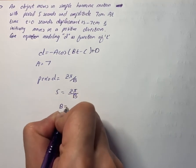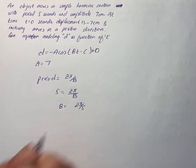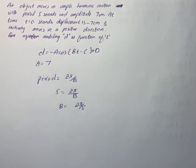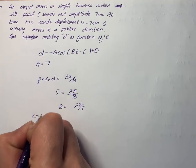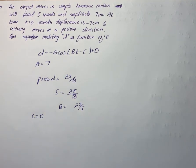So B equals 2π/5. Since the minimum displacement is at t equals 0, there is no phase shift, so C equals 0.